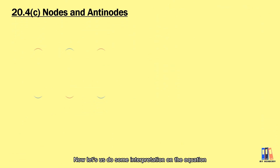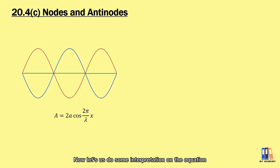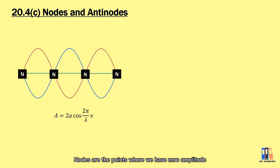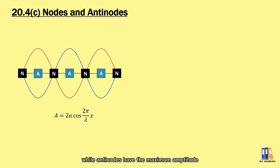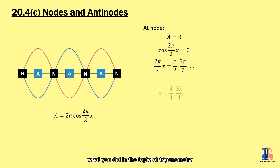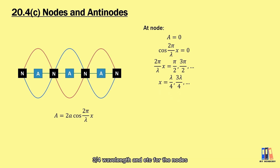Now let's interpret the equation. Here is an example of a standing wave. Recalling wave interference, we have nodes and antinodes. Nodes are points of zero amplitude. Setting the amplitude equal to zero and solving — similar to what you did in trigonometry — gives possible values of x at λ/4, 3λ/4, and so on, for the nodes.